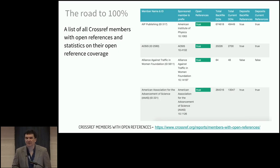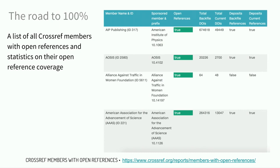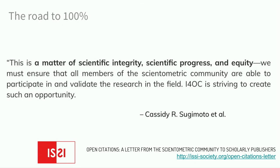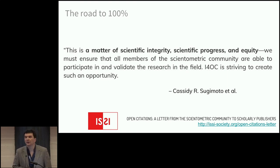A month ago, Crossref announced a tool that allows you to check for every individual publisher their statistics and the status of their references — the coverage of DOIs, coverage of DOIs with open references, and their default policy on reference distribution. We've also received a lot of support from multiple stakeholders. The International Society for Scientometrics and Infometrics posted a letter calling all major publishers who haven't joined the initiative to do so, signed by leading voices in the field — it's really humbling to have the scientometrics community support the notion of open citation data.